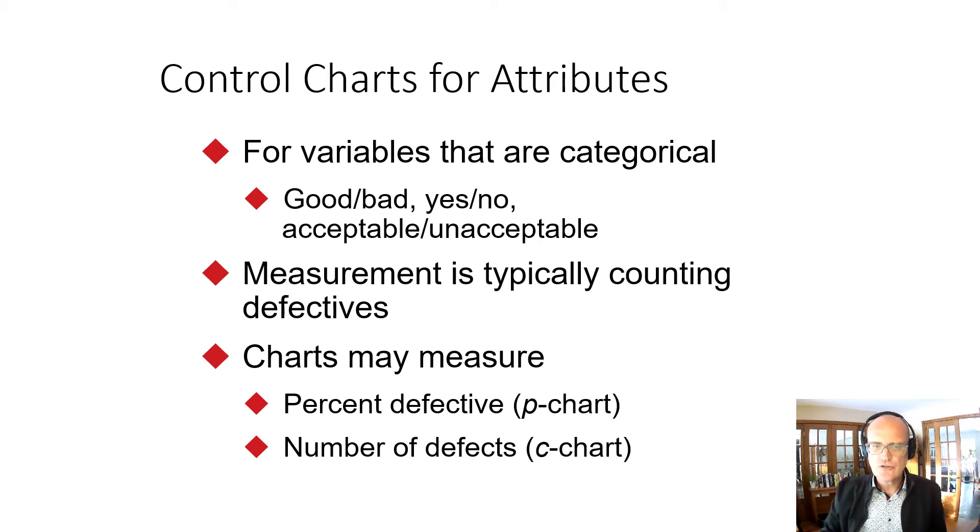So there are two types of charts for attributes. The first one is called a p-chart and it's a proportion or a percentage chart. You look at the proportion, you come up with a control chart, central tendency and upper and lower limits for the proportion or the percentage that is defective. In that circumstance, you are sampling a specific number. You're saying, okay, we're going to look at a hundred units and see what percentage of those are defective. So if you have an N, if you know how many you're sampling, then you use the p-chart.